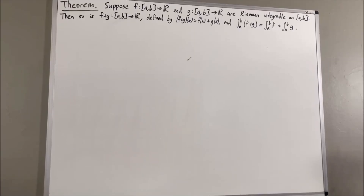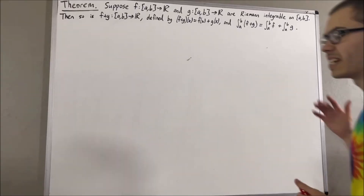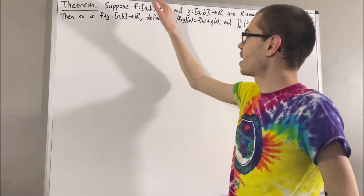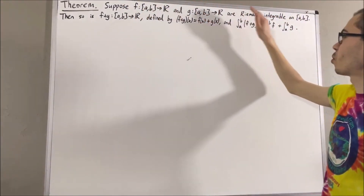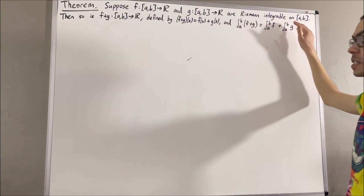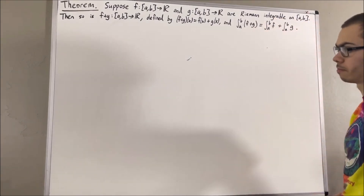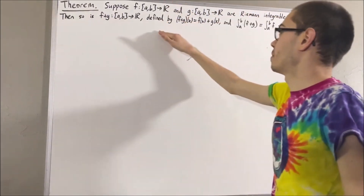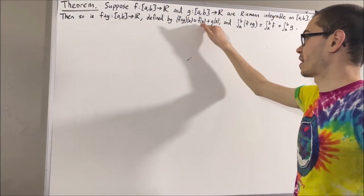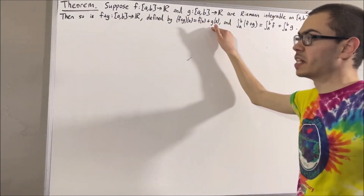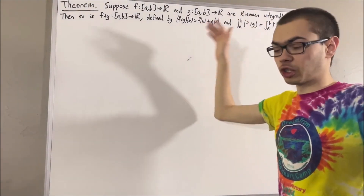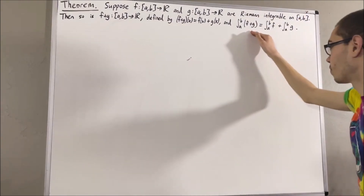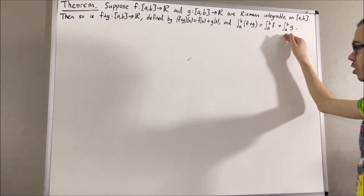Hello. In this video, we are going to prove the following theorem. Suppose f and g are both Riemann integrable functions on [a, b]. Then, the function f plus g, defined by (f + g)(x) = f(x) + g(x), is also Riemann integrable on [a, b], and the integral of f plus g is equal to the integral of f plus the integral of g.